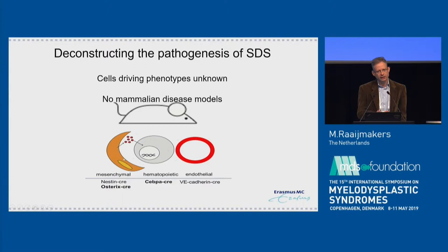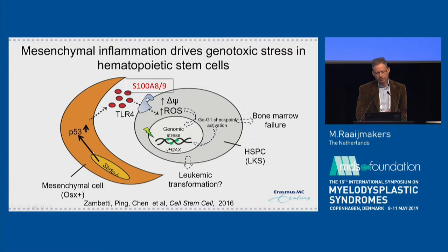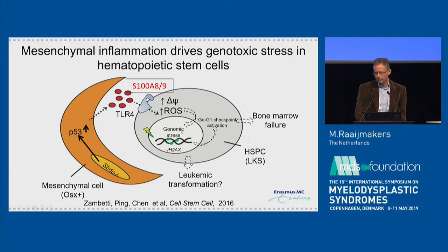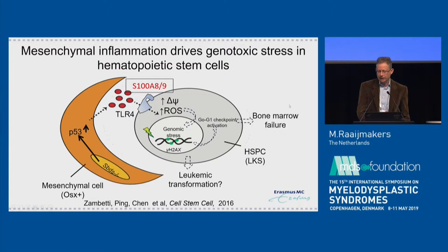This leads to activation of P53 and then an inflammatory profile, including overexpression of the DAMPs S100A8 and A9, that partially through TLR4 signaling induces distinct abnormalities in stem and progenitor cells — hyperpolarization of mitochondria, ROS, and genotoxic stress, DNA damage — accompanied by cell cycle checkpoint activation. So here is a link between a human disease-relevant stromal abnormality and bone marrow failure.